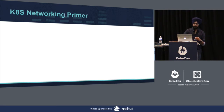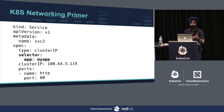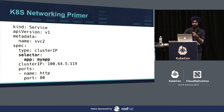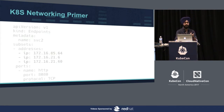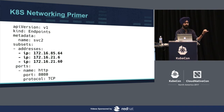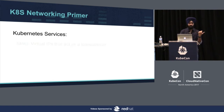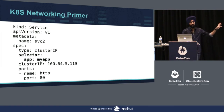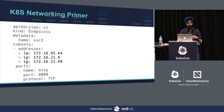If you have a service manifest with a selector field saying app: my-app, all pods that have that label will show up in the service's endpoints. The cluster IP is a virtual service IP that doesn't actually exist anywhere, and the endpoints are the real pod IPs behind it.